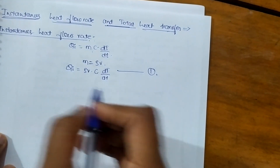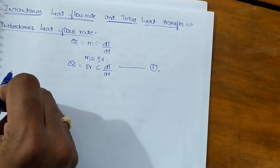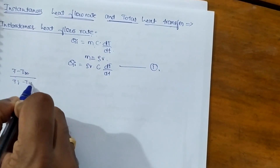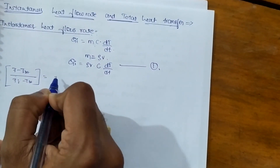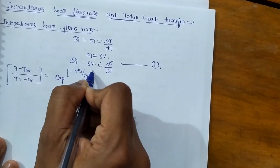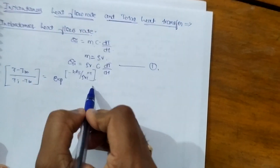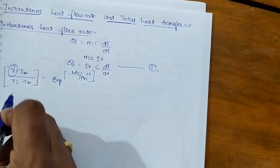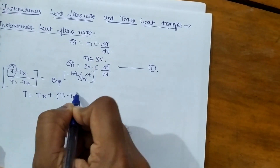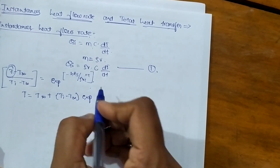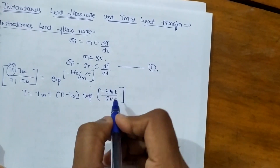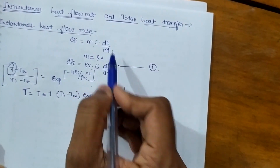In the previous video we derived (T - T∞)/(Ti - T∞) = exp(-h·As / ρVc · t). From this equation we can write T = T∞ + (Ti - T∞)·exp(-h·As·t / ρVc). Now substitute this T value in equation 1.